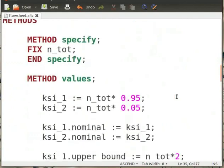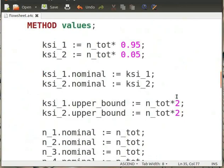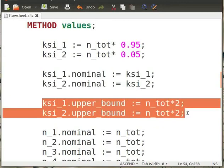Now under methods section, we define methods in a similar way as that for mixer. Under values section, instead of giving a direct value, we initialize the value of reaction extent ζ1 and ζ2. We thus give a nominal value to ζ1 and ζ2.